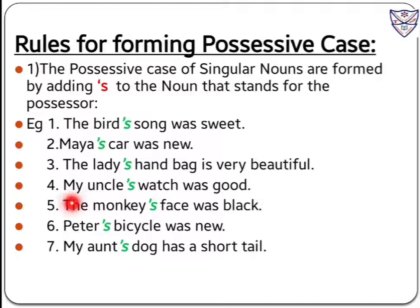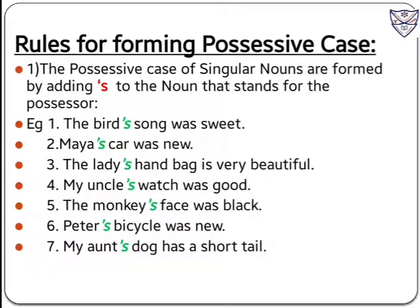Number four: my uncle's watch was good. There is possession of the watch with uncle — the watch belongs to uncle. Therefore after e we put apostrophe s. Number five: the monkey's face was black. The face belongs to the monkey. After y of monkey we put apostrophe s to show the possessive case. Number six: Peter's bicycle was new. To show possession of the bicycle with Peter, we put apostrophe s after r. The bicycle belongs to Peter.